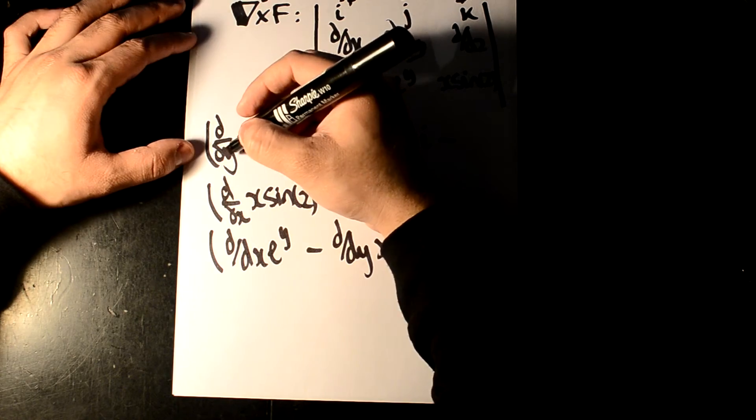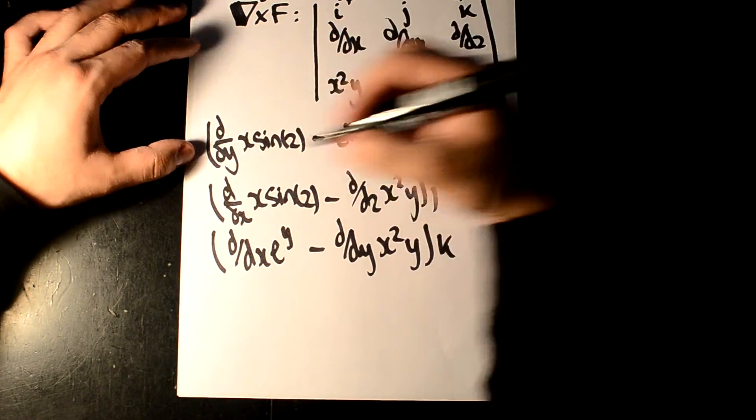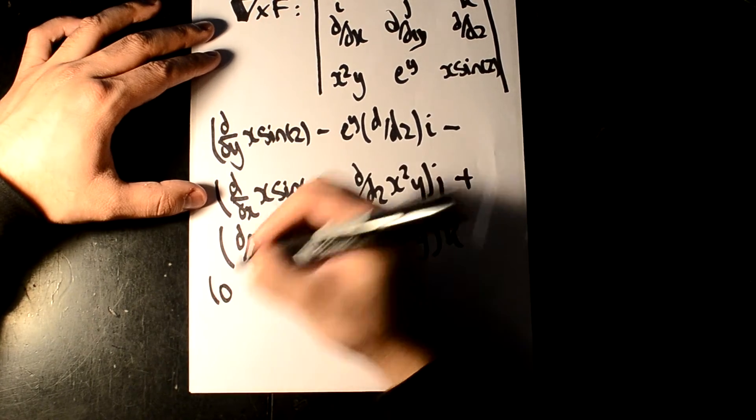As you can see, it's d over dy here, and x sine z contains no y terms. So i is going to be zero.